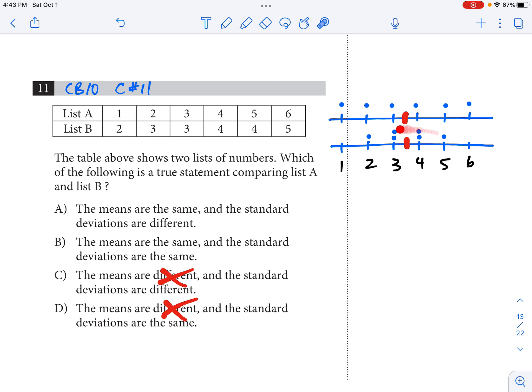In List B, you can see by my dot plot here that this list is much less spread out than this one. All that means is you don't have to know how spread out they are or what the ranges are. The only thing that means is that the standard deviations are different. And that is why we end up with A as our final answer.